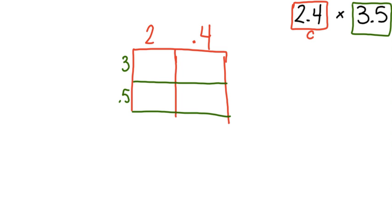The second step in the rectangular sections method is to turn both of these numbers into smaller multiplication problems to make it easier to solve at the end. The 3 in the first row and the 2 in the first column meet in the first cell right here, so I am going to turn that into the smaller multiplication problem of 3 times 2. I know 3 times 2 is 6, so that is my very first number in the problem.